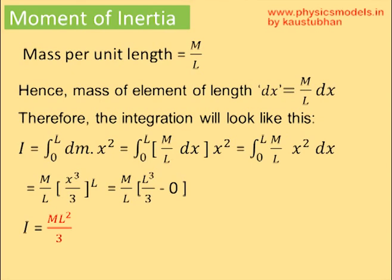You can take m/l outside the brackets. You will get x cubed by 3 as a result of the integration, evaluated from 0 to l. That will give you m/l times l cubed by 3 minus 0. Therefore, I is equal to ml squared by 3. This is the moment of inertia for the rod rotating about the axis shown in the sketch.